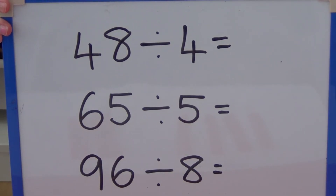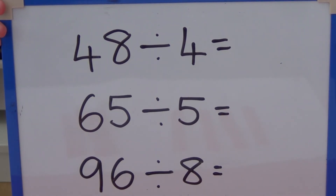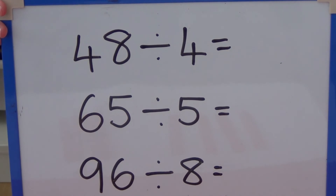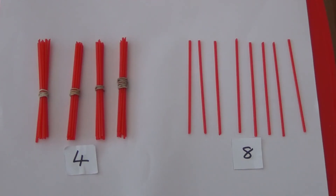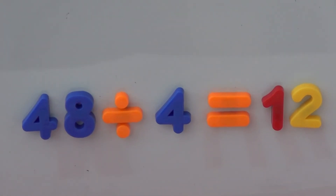Why don't you pause the video and have a go at some yourself. For 48 we need 4 bundles of 10 straws and 8 ones. We are dividing by 4, so we need to put the 10s into groups of 4 and then the ones. So 48 divided by 4 equals 12.